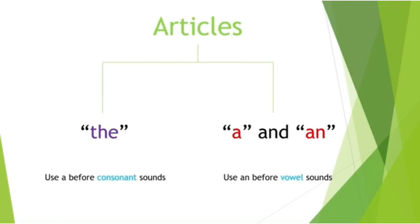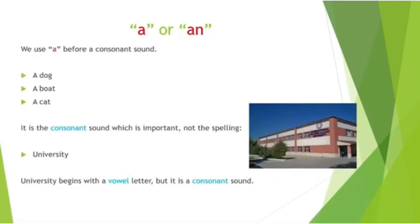We use 'a' before a consonant sound and 'an' before a vowel sound. The rule is: we use 'a' before a consonant sound. For example, 'a dog' starts with a consonant sound, 'a boat', and 'a cat' — they all start with a consonant sound. Very important: it is the consonant sound which matters, not the spelling.